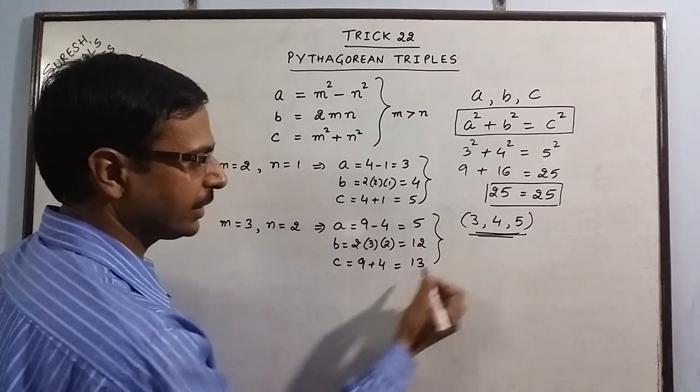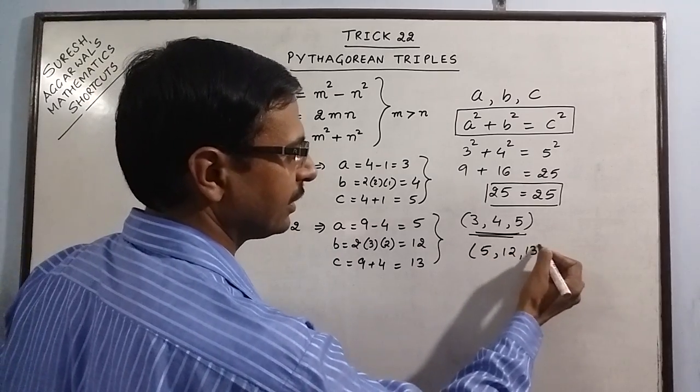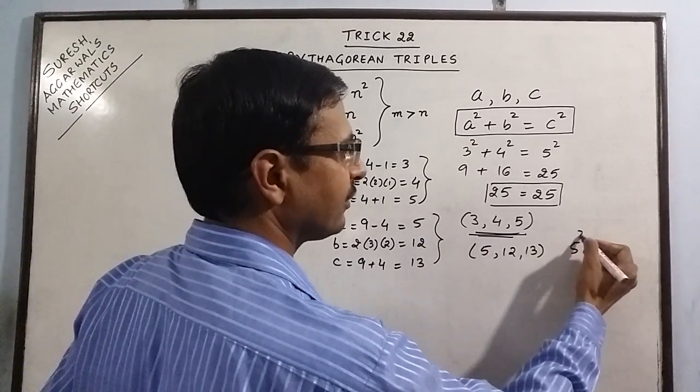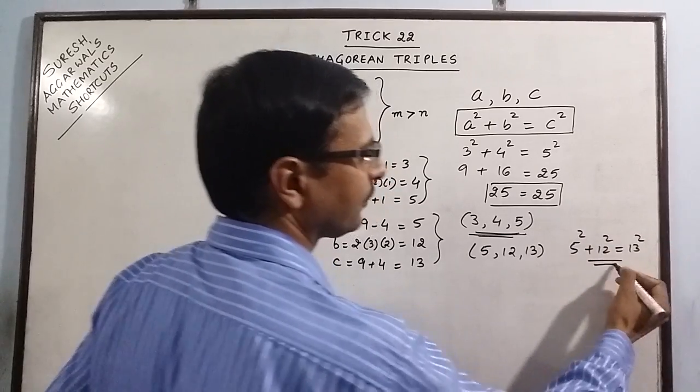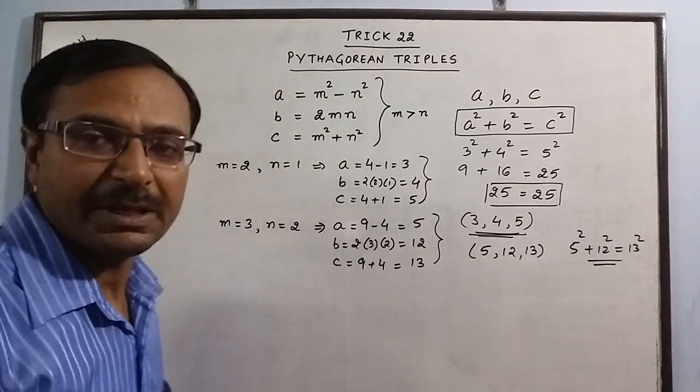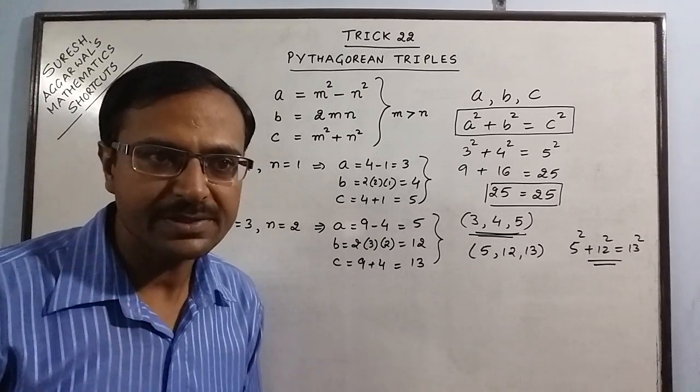So, another Pythagorean triplet is 5, 12, 13. That is, if you square 5 and square 12, you will get the square of 13. Similarly, you can extend this method to find any number of Pythagorean triplets.